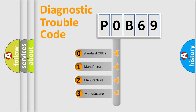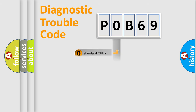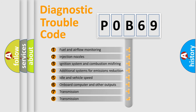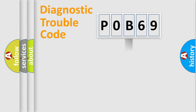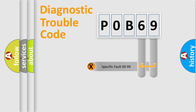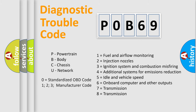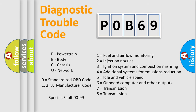If the second character is expressed as zero, it is a standardized error. In the case of numbers 1, 2, or 3, it is a manufacturer-specific expression of a car-specific error. The third character specifies a subset of errors. This distribution is valid only for the standardized DTC code, and only the last two characters define the specific fault of the group. This division is valid only if the second character code is expressed by the number zero.